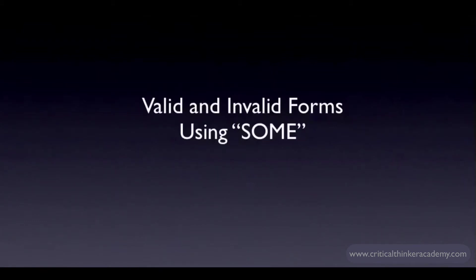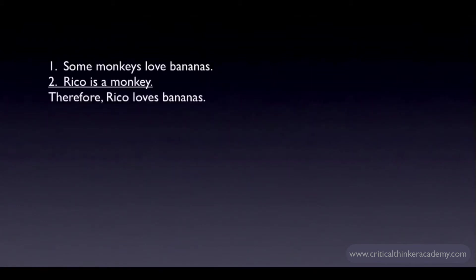Let's look at a couple of argument forms that use 'some.' Some monkeys love bananas. Rico is a monkey, therefore Rico loves bananas. This obviously is not valid. Once you downgrade the generalization from 'all' to 'some,' you lose the validity of the inference.